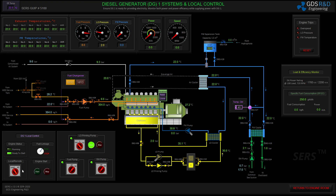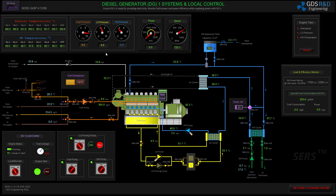I will start the generator in local mode. The oil pressure and fresh water pressure are rising. The engine speed is supposed to reach up to 720 RPM. All parameters look stable.